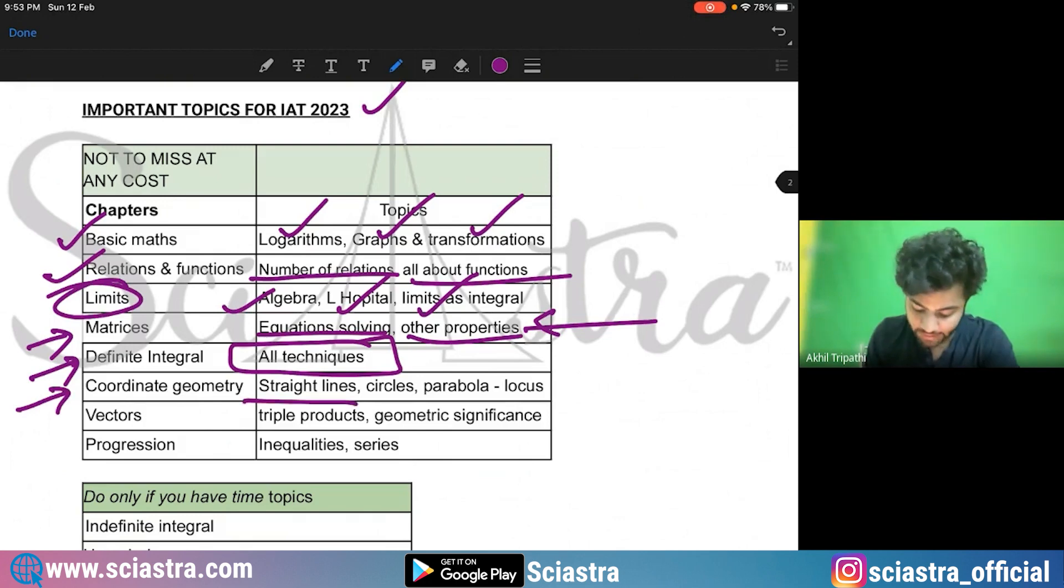Coordinate geometry, straight lines, circle, parabola, especially the locus part. Actually locus of straight line, circles, parabola, locus questions are important.